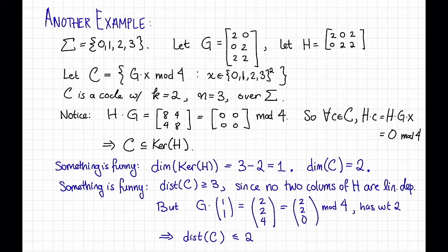If we do that, we'll see that something continues to be funny. If we repeat the logic that we had in the previous video, that same logic holds here to show that the distance of this code is at least 3, and that follows if we were to apply the previous logic, since no two columns of H are linearly dependent, at least maybe it looks like they're not.